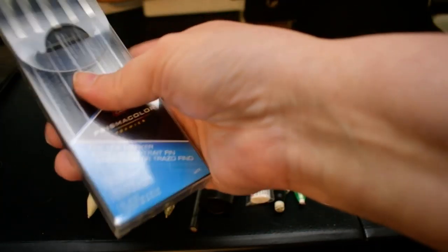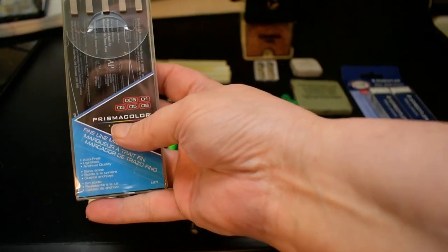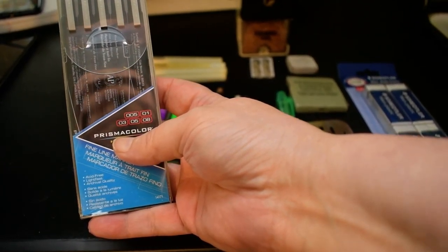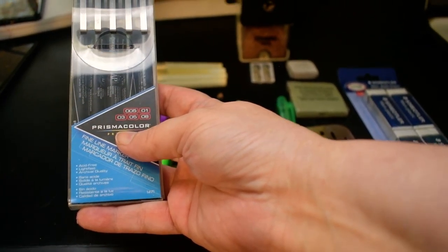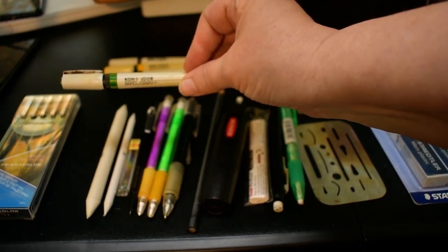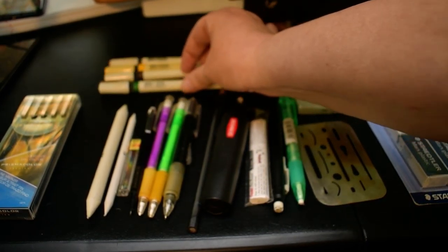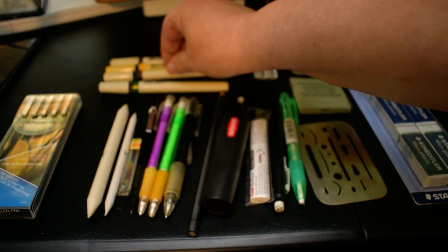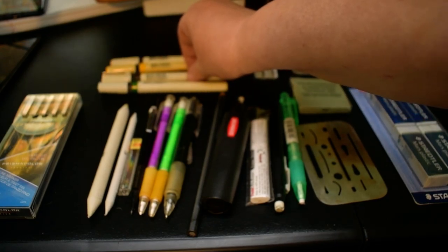Now, these are Rapidograph pens that are disposable. These ones are by Prismacolor - they're really good, they're excellent. Also, Micron pens are very good. I like them, I use them and swear by them. Before, I used to use the Koh-I-Noor Rapidograph pens or Rotrings also, and these are really good - you fill them up with ink.